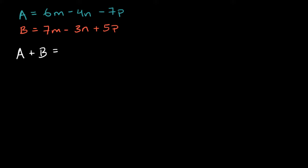All right, now let's work through this together. So first we have A, and I'm just going to rewrite it over here. So we have 6M minus 4N minus 7P. And then to that, we are going to add B right over here, which is 7M minus 3N plus 5P.